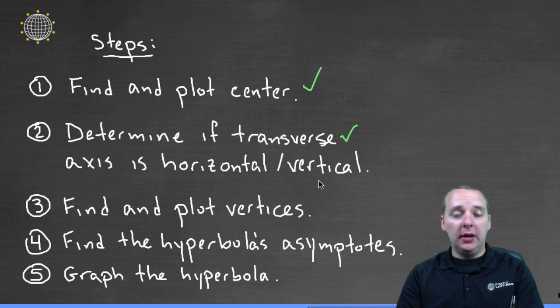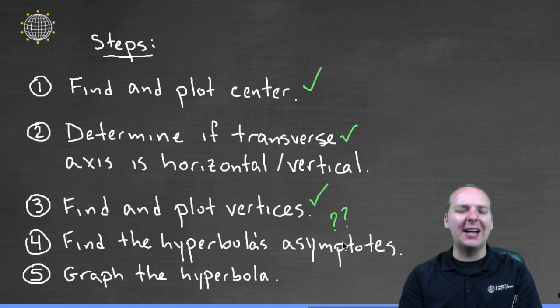To answer that question, we found the center, we had a horizontal transverse axis, we found the vertices, now it's time to find these asymptotes that I've been talking about. So what the heck is that?